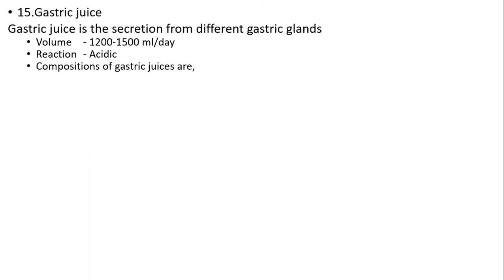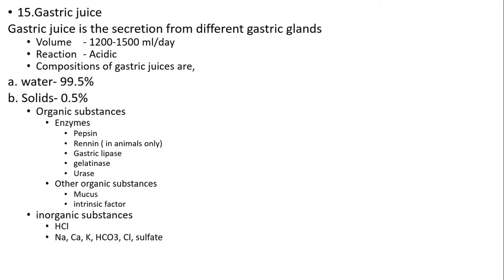Gastric juice is secreted from different gastric glands. The volume is 1,200 to 1,500 ml per day and the reaction is acidic. The composition includes water and inorganic components at 99.5% and solids at 0.5%. Organic components include enzymes like pepsin, renin, gastric lipase, gelatinase, and urease, as well as mucus and intrinsic factor. Inorganic substances include hydrochloric acid, sodium, calcium, potassium, bicarbonate, chloride, and sulfate.